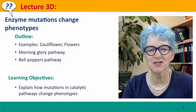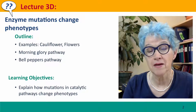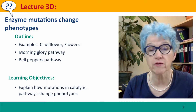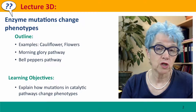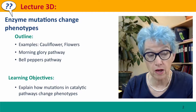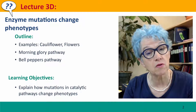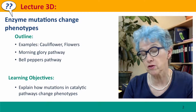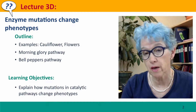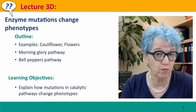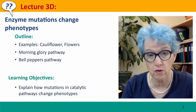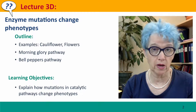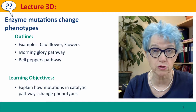Hi, everyone. Welcome back to Useful Genetics. This is lecture 3D, where we're talking about the relationships between enzymes and phenotypes. We'll talk about examples of cauliflowers and flowers, and look at a couple of biochemical pathways that affect things you probably see all the time — one is the blue pigments of morning glory flowers, and the other is the colors of the peppers that we can buy in the supermarket.